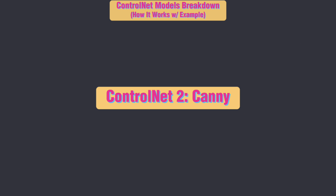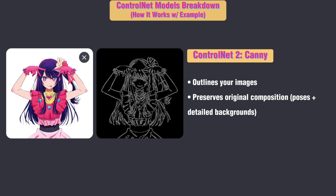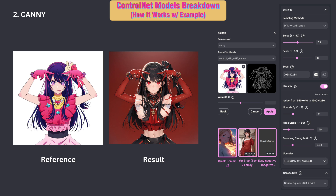ControlNet 2: Canny. It outlines your images while preserving their original composition — whether it's intricate poses or detailed backgrounds, it has you covered. You can use it to change characters while keeping the same pose. Here is an example where I replaced Hoshino with Yor Forger in the image.